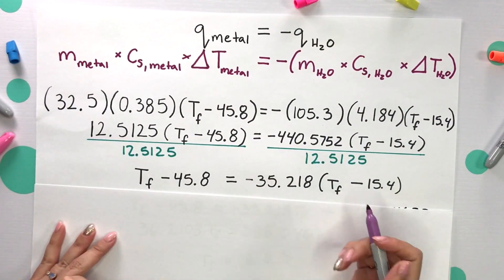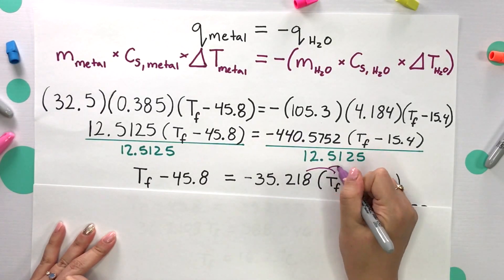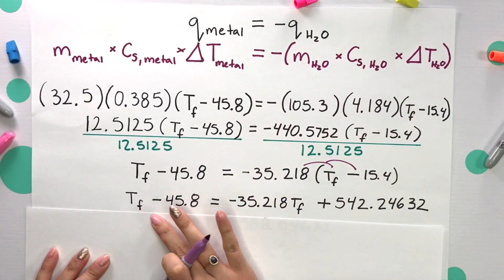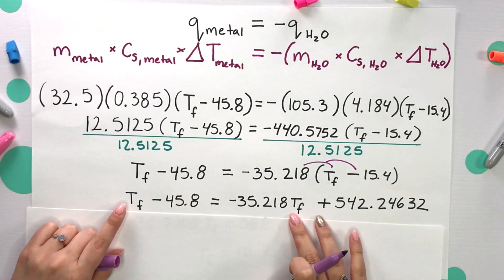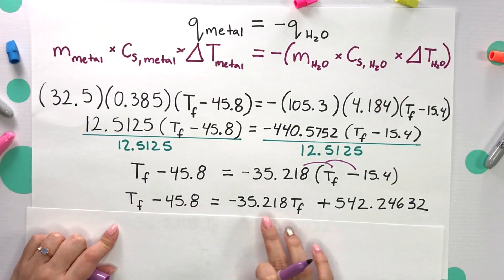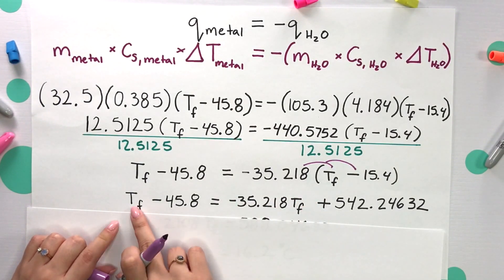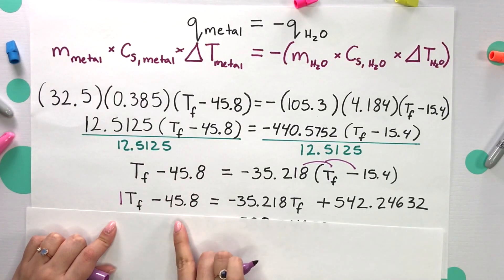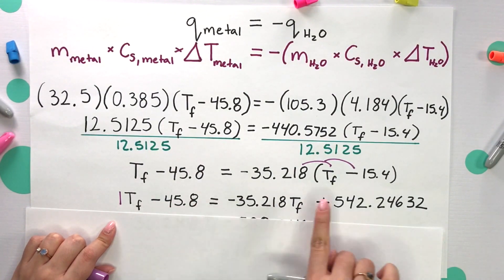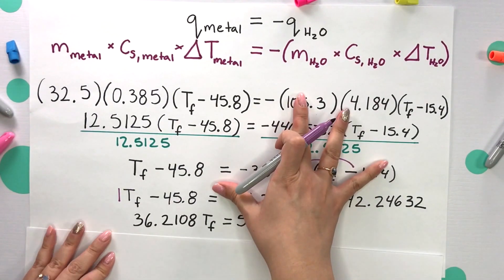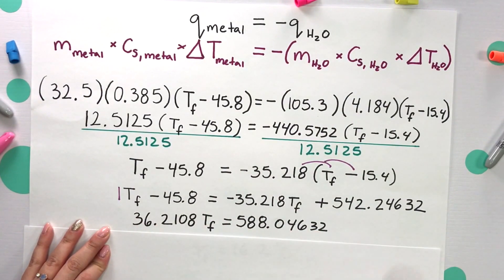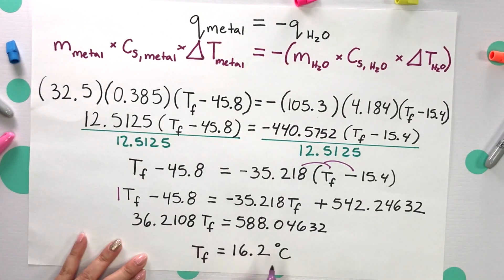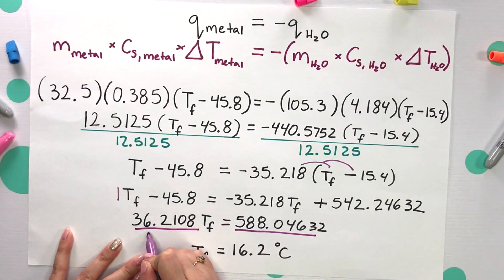Now I'm going to distribute. We get two T final terms, so we combine like terms. We add the 35.218 T final over to the opposite side — there's really a 1 in front of that T final. Combine those two values and add the 45.8 over to the opposite side. Then divide both sides by 36.2108.